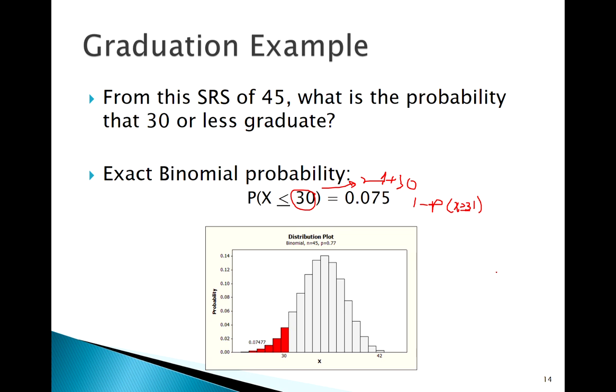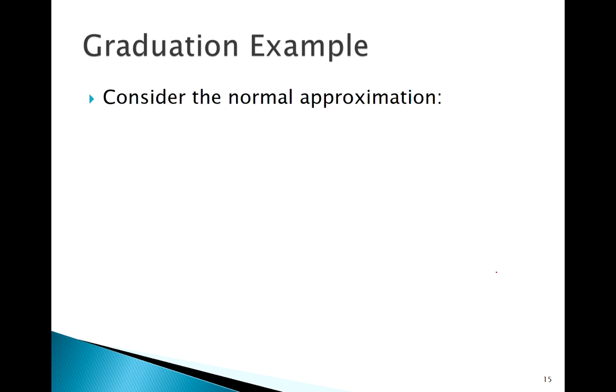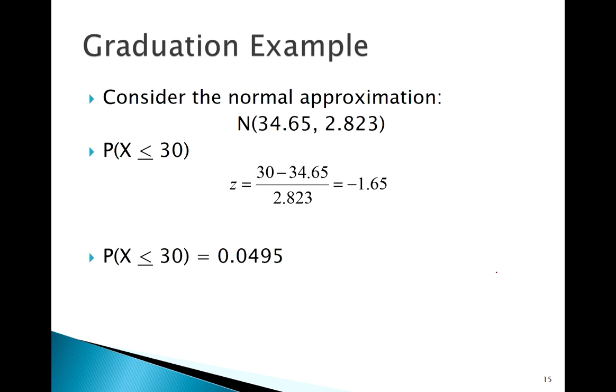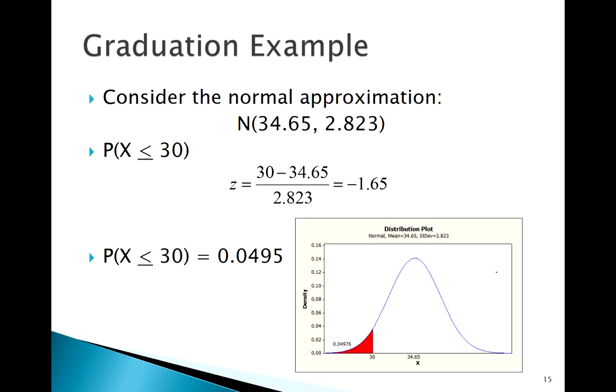But if I do want to find the exact binomial probability, I can do that if I have a computer, if I have technology. Here, this is from Minitab. Or you can do it in Excel if you like. So our normal approximation was this. Now, doing it by hand with the normal approximation is easy. I just find a z-score, go to my table, less than that z-score, there we go. There's my probability.